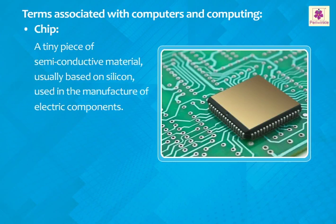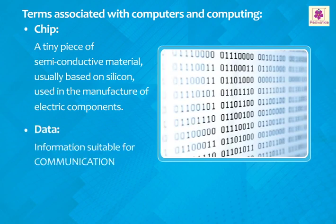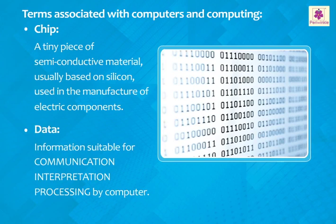A chip is a tiny piece of semi-conductive material, usually based on silicon, used in the manufacture of electric components. Data is information suitable for communication, interpretation, or processing by a computer.